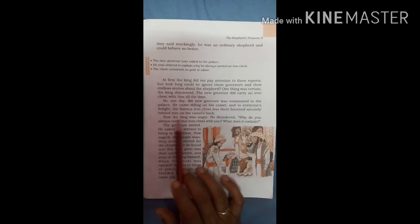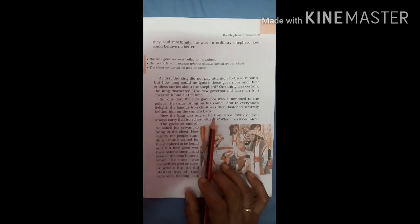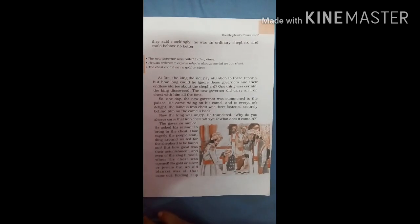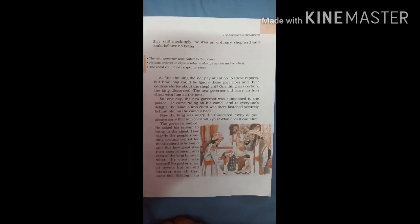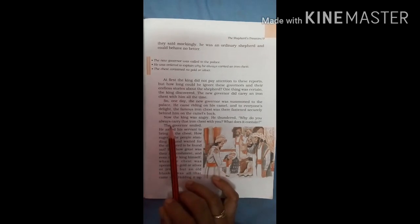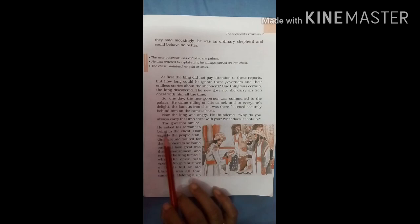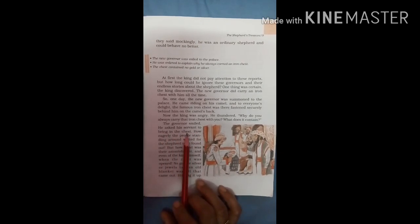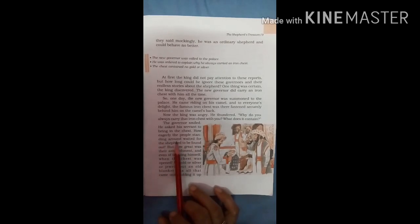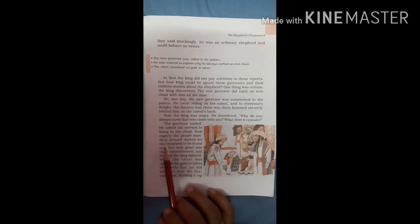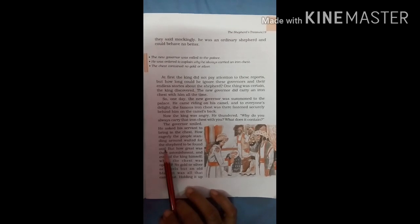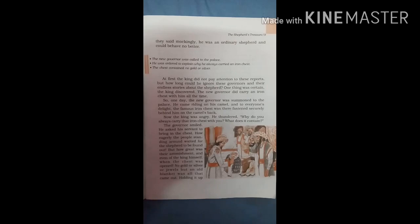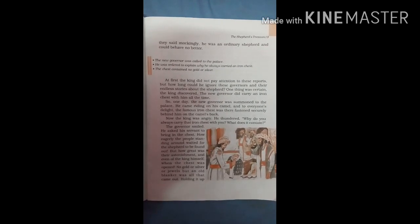Now the king was angry. He thundered, why do you always carry that iron chest with you? What does it contain? The king angrily asked why he keeps the iron chest with him and what is in it. The governor smiled. He asked his servant to bring in the chest. How eagerly the people standing around waited for the shepherd to be found out. The governor smiled and asked the servant to bring the iron chest, and all the people were waiting to see what would come out of the chest.